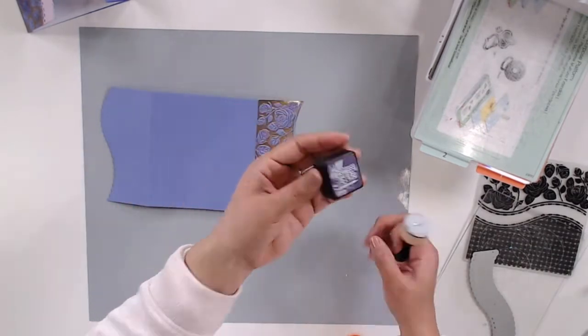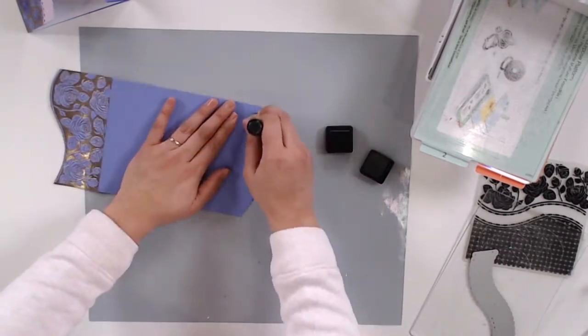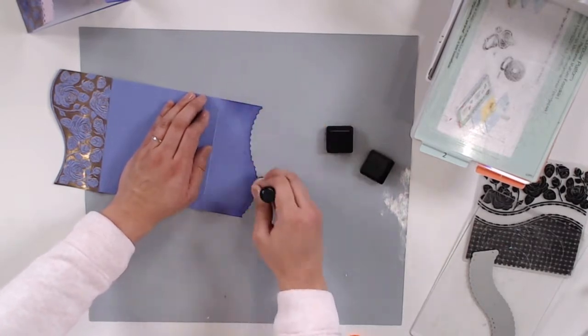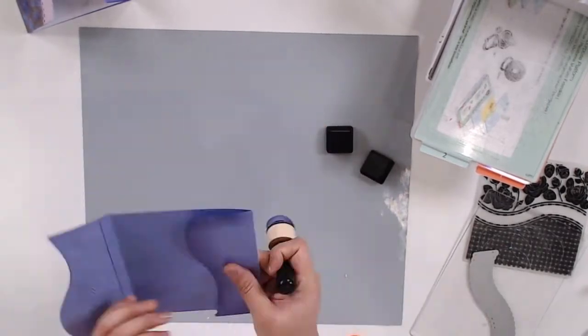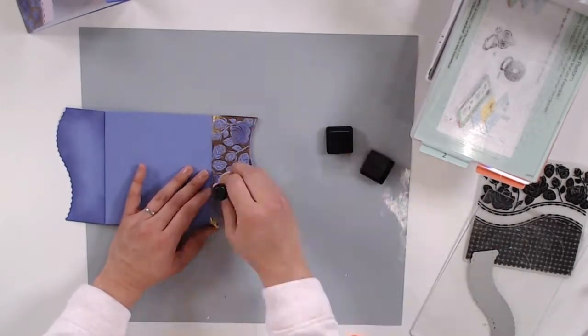I wanted to add some inking to my edges and also some deeper color to my roses, so I'm going to be using Tim Holtz Distress Ink in the color Dusty Concord with my mini ink blending tool to just spread some color throughout my card and give it a little bit more interest.